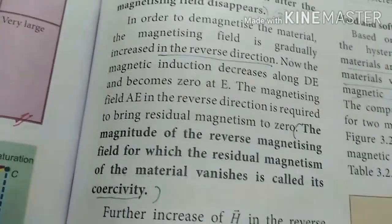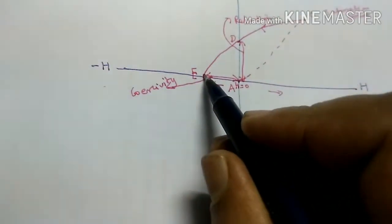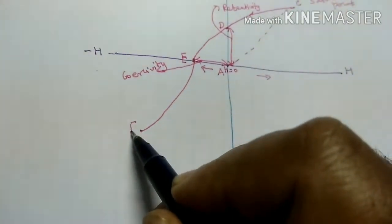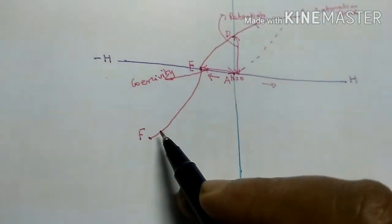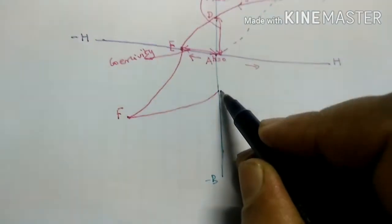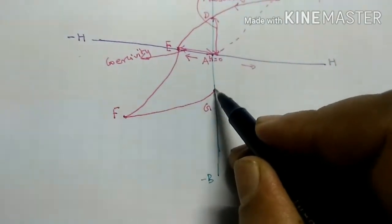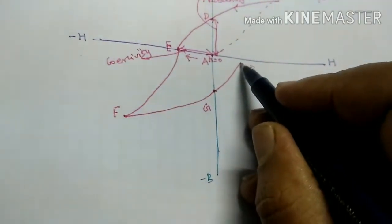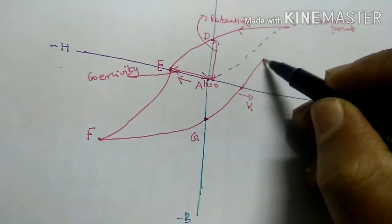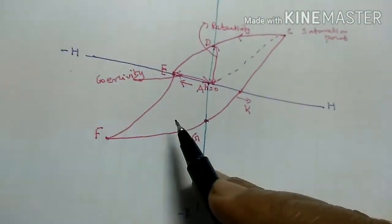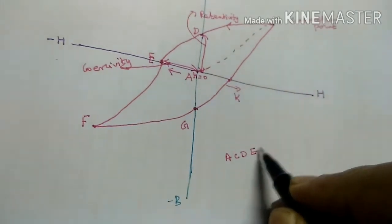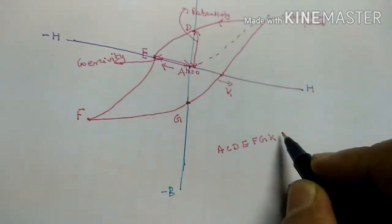Retentivity and coercivity are the important properties. Next, I increase H in the reverse direction and B also increases and reaches the saturation point in the reverse direction at point F. Then it decreases again, B retains some value, and when H increases again, it reaches saturation once more. We get a closed path — a closed loop — traced through points A, C, D, E, F, G, K, and back to C.